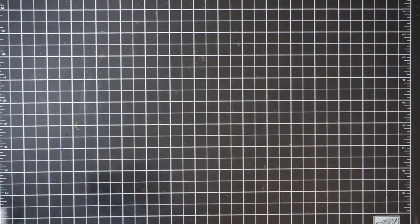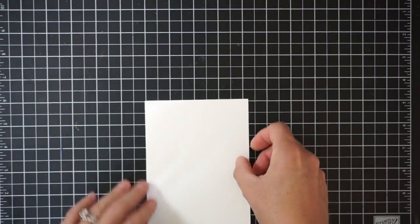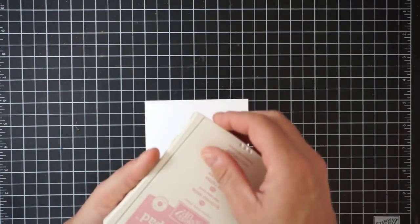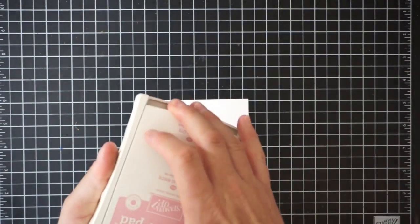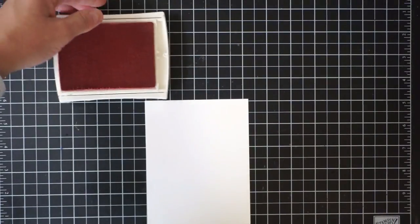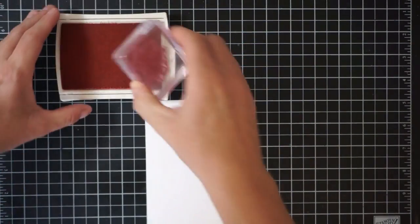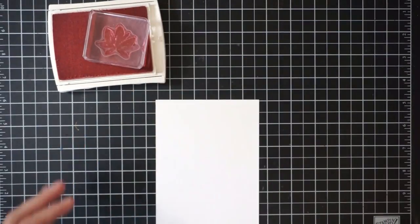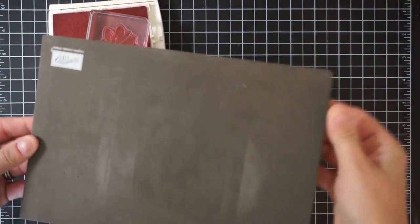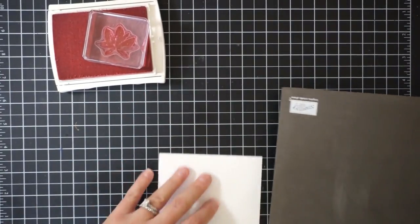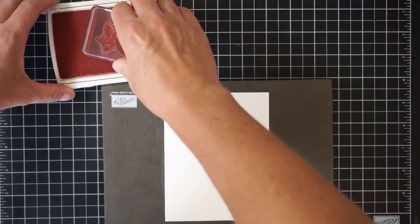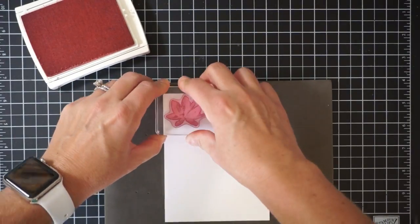I have a piece of Whisper White cardstock and an array of Stampin' Up colors. In total I used about nine different colors for this wreath. I'm using the solid floral image. Because this is a photo polymer stamp, you want to use some cushioning behind your cardstock so that you get a really nice solid image.